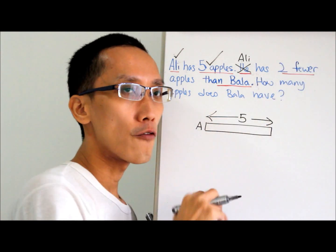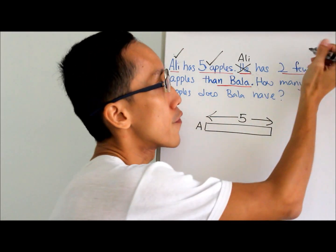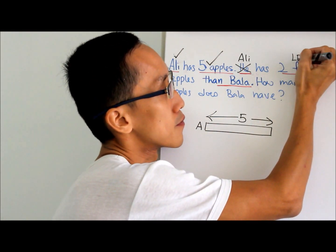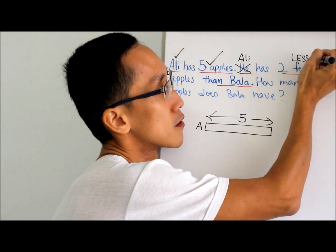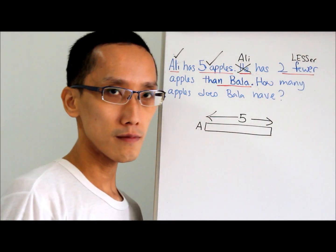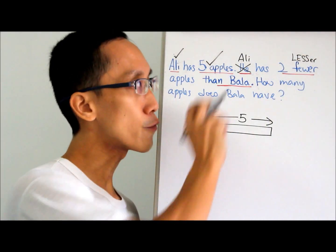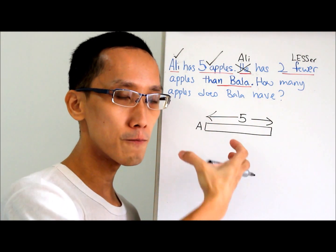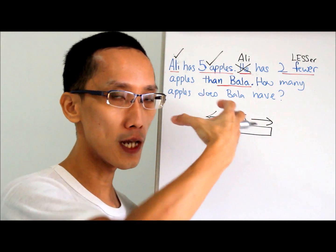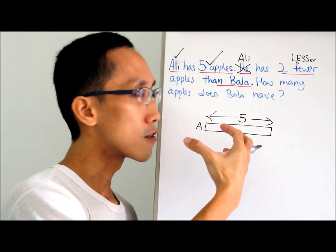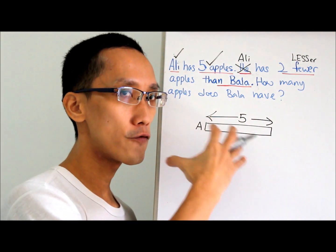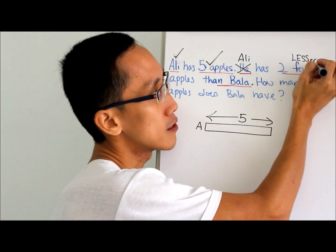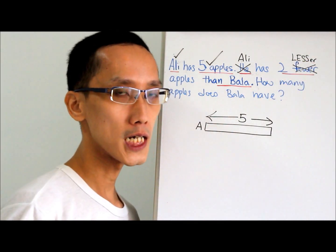Now 'fewer.' Fewer also means less. You see the way I write — I bring out the meaning first. The meaning is more important, so I bring out the word 'less' so that they can just focus. Then you can cross out 'fewer.'